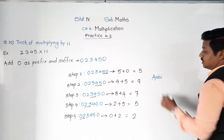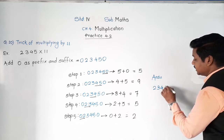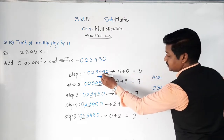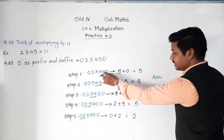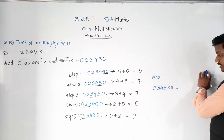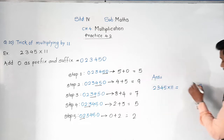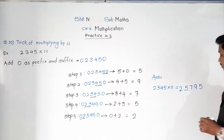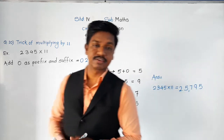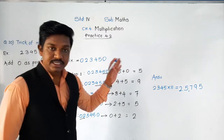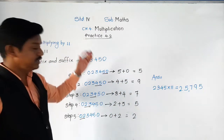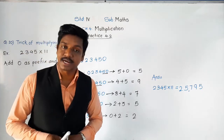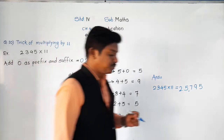Our question was 2345 into 11. We started from the right side, one digit at a time. The answer digits we got are: 5, then 9, then 7, then 5, then 2. So the answer is 25,795. It's easy, isn't it? When you practice this, you can directly write the answer without all these steps. Now pause this video and practice.